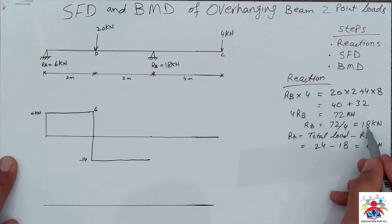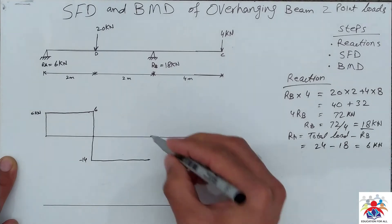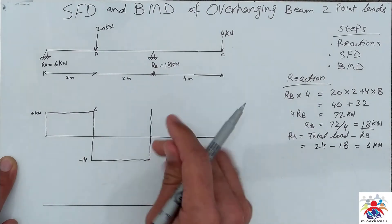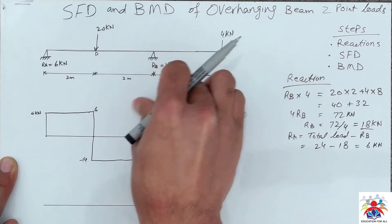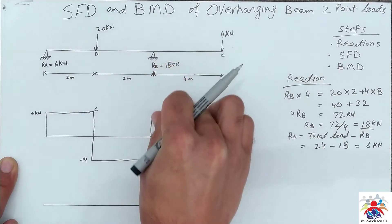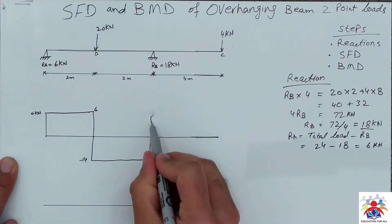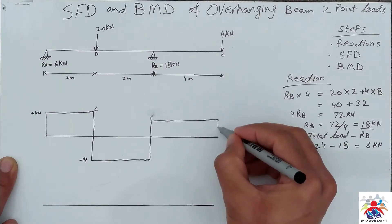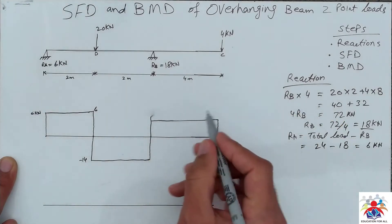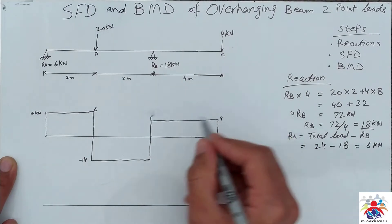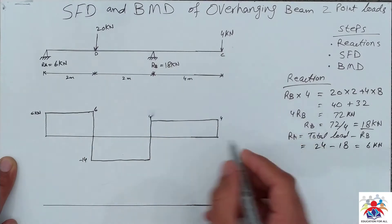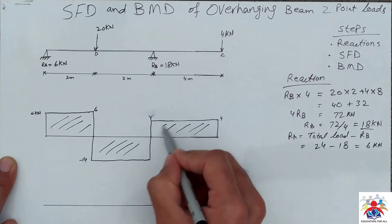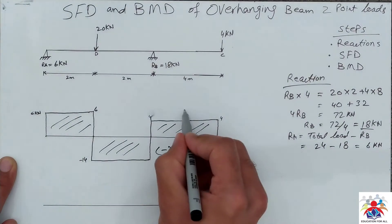Once we are at point B, we go up because we have 18 kilonewton reaction at point B. So minus 14 plus 18 gives us 4, which is slightly below 6. We then connect it to point C. Part of the diagram is in the positive zone and part is in the negative zone.